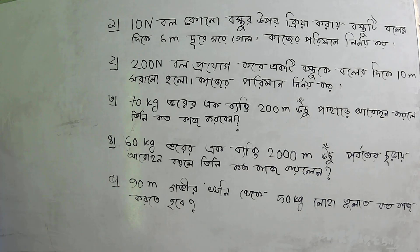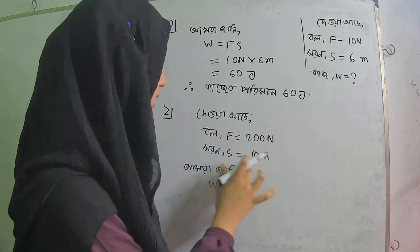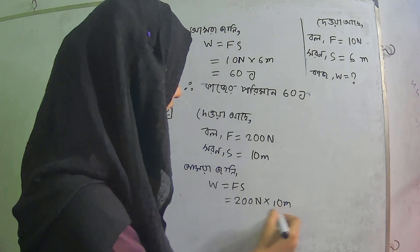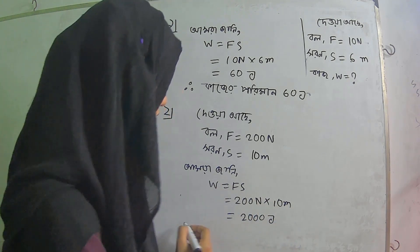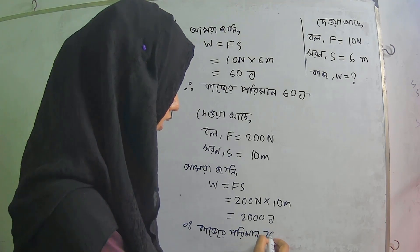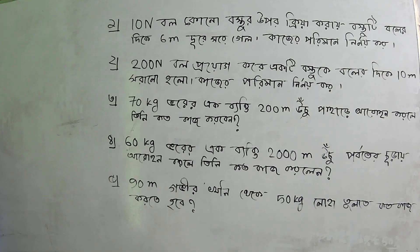A force of 200 N acts on an object and moves it 10 meters in the direction of the force. Calculate the work done.